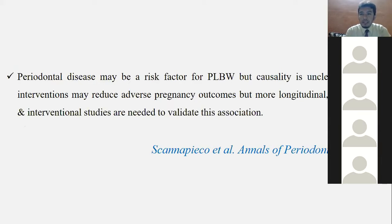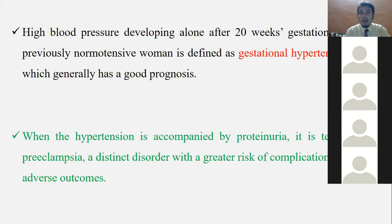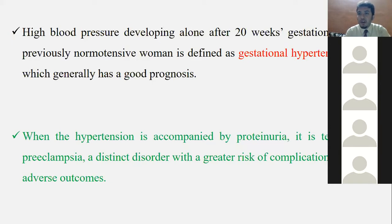Scannapieco 2003 in the Annals of Periodontology stated that periodontal disease is a risk factor but causality is not clear. Regarding preeclampsia: it is gestational hypertension accompanied by proteinuria — when hypertension occurs with proteinuria during pregnancy it is called preeclampsia. It is a distinct disorder caused by inflammation in the placenta and amniotic sac spreading systemically, leading to vasoconstriction throughout the body.